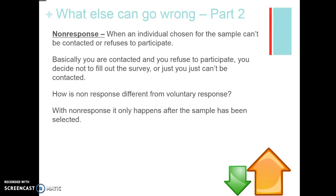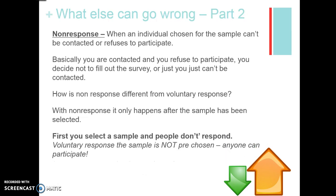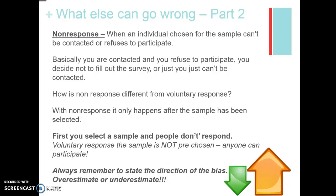The major difference between non-response and voluntary response is that non-response happens after the sample has been selected — the people are chosen but they refuse to participate. With voluntary response, anybody can respond and it's mostly people with strong opinions; they're not pre-chosen. Remember when talking about bias to state the direction — is this giving us an overestimate or underestimate of the population?